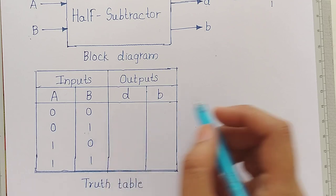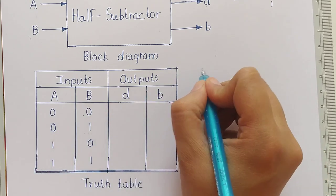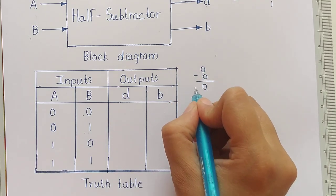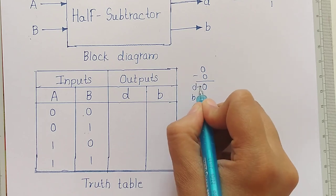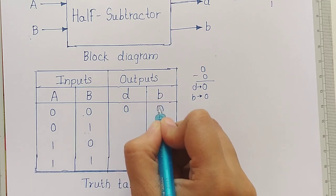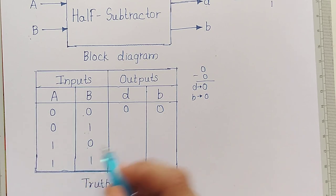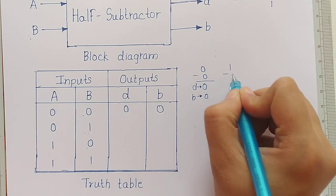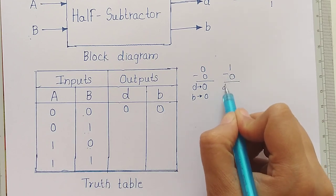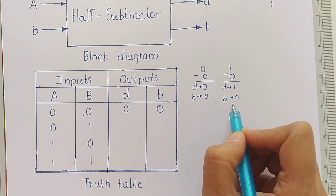Now we derive the truth table. First case: 0 minus 0 — the difference is 0 and there is no borrow, so D=0 and B=0. Taking the third case directly: 1 minus 0 — the difference is 1 and there is no borrow, so D=1 and B=0.